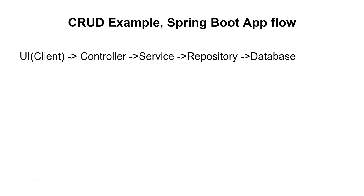They may also ask you to explain the Spring Boot application flow or how a Spring Boot web application works. When a request comes from the UI or client side, it goes to the controller layer, which invokes an endpoint and the method associated with it. The request then goes to the service layer, then to the repository layer, and then to the database. Data is fetched from the database and returns back through the repository layer, service layer, and finally back to the client.